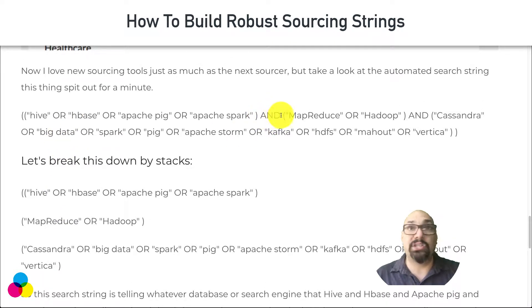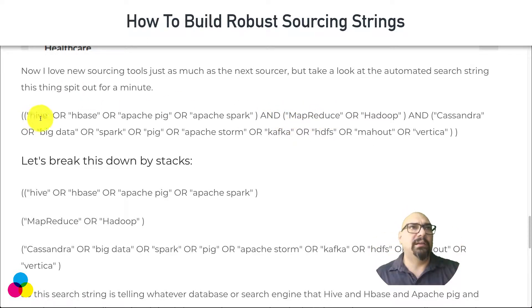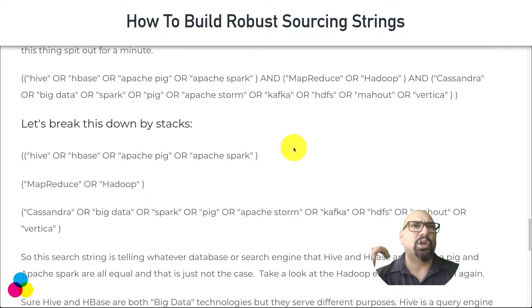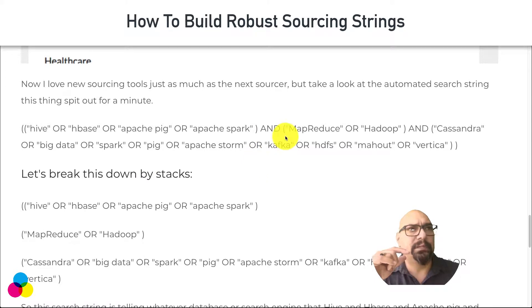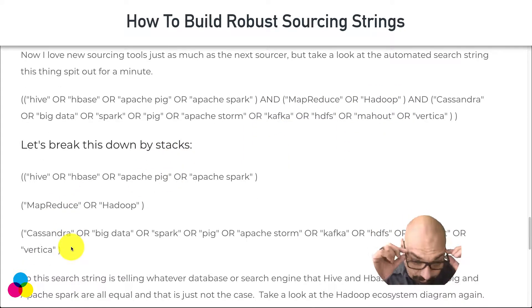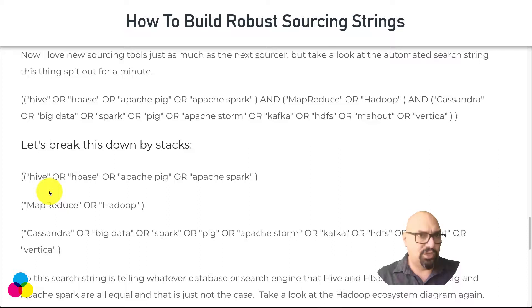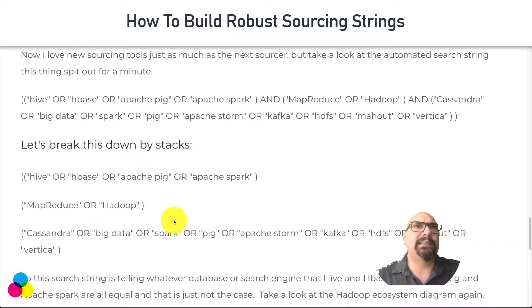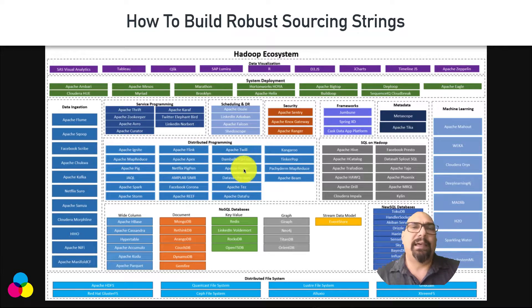Then you put an AND statement, and sometimes you can just leave it blank, and the new line of parentheses will tell it: one of these AND one of these. You start stacking them, so the second line gives you MapReduce. The issue is if you put all these into LinkedIn or wherever you're searching, you'll get some candidates — but this is not a smart way of structuring the search because it has different categories of the Hadoop ecosystem sitting side by side.